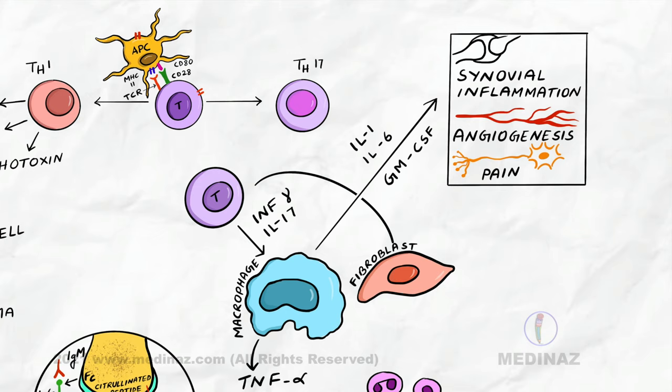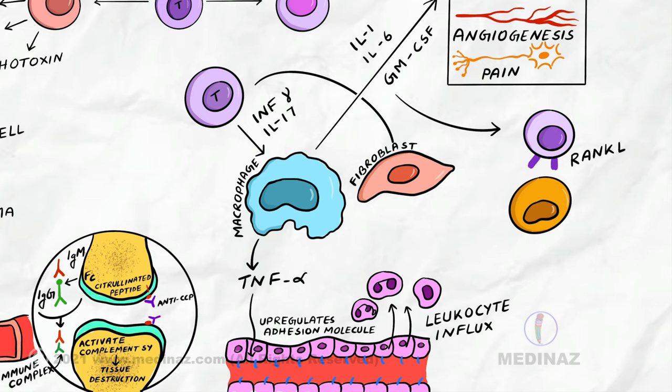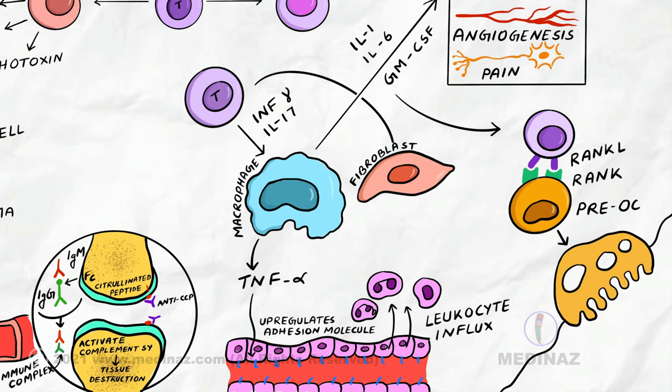Inflammatory cytokines increase the expression of proteins on the surface of T cell known as Rank ligand or Rank-L. Rank-L allows T cell to bind Rank protein on the surface of pre-osteoclasts and convert them into activated osteoclasts. These activated osteoclasts are responsible for bone destruction.